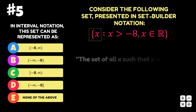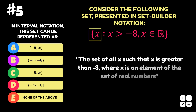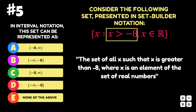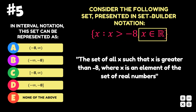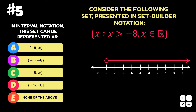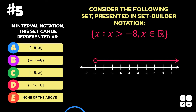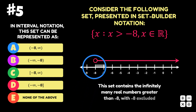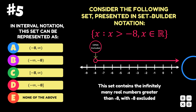We can describe this set as the set of all x such that x is greater than negative 8, where x is an element of the set of real numbers. We can illustrate this set on a number line as shown here. This set contains the infinitely many real numbers greater than negative 8, with negative 8 excluded, as indicated by the open circle.